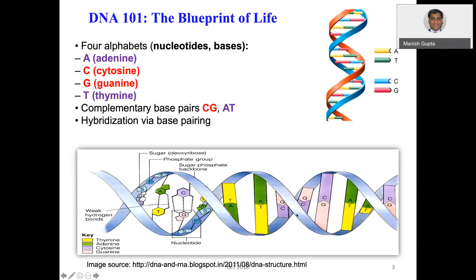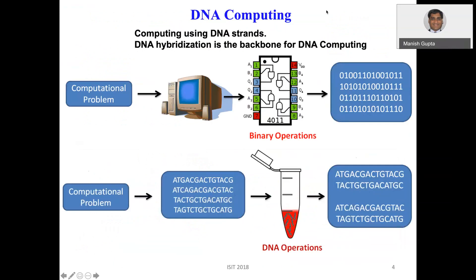There are two hydrogen bonds between A and T and three hydrogen bonds between C and G. That's how hybridization works. If there is an ACGT string and another complementary ACGT string, the complementary pair will combine and give hybridization. If you increase the temperature, those bonds will break and you get single-stranded DNA. DNA hybridization is the backbone for DNA computing.